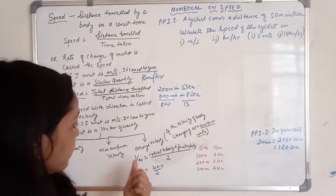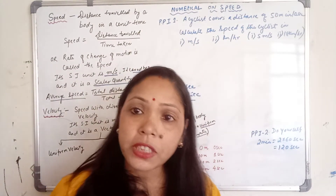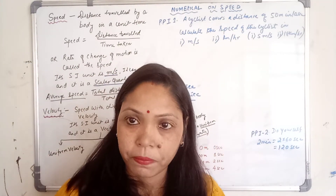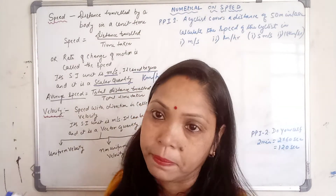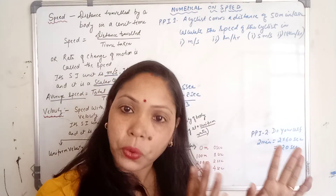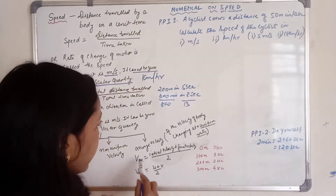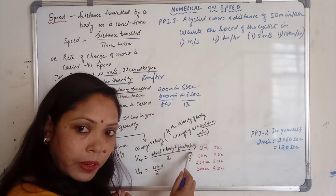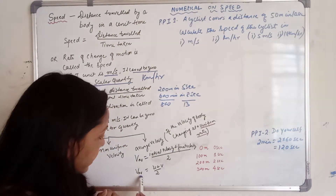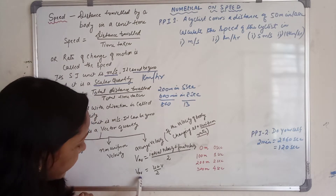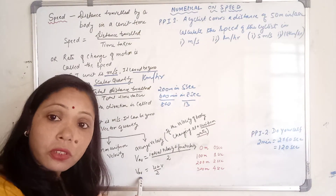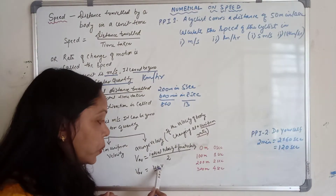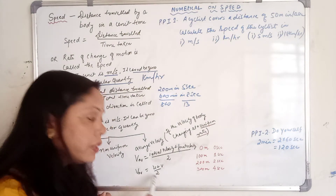Now, average velocity. Average velocity means if the velocity is changing uniformly for a uniform motion. If the body is in uniform motion, then you can find the average velocity using initial velocity plus final velocity divided by 2. Average velocity (V_av) is equal to U plus V divided by 2. Average is also called the mean.